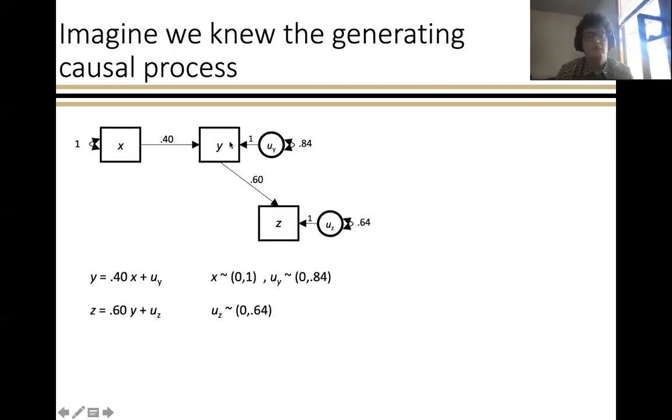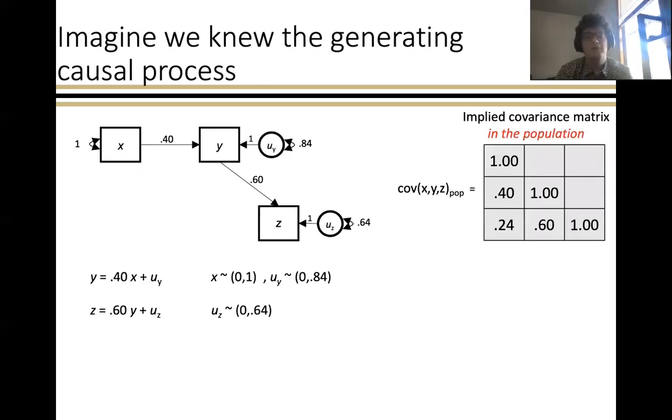If we extend that out to say that we know that y causes z at 0.6, that would add on this additional notation of z equals 0.6 times y plus u. And so this would imply a particular covariance matrix in the population, this set of relationships, where this is in a standardized space. On the diagonal, we have the variances of the variables, which are one. And then on the off diagonals, we have the relationship between x and y at 0.4, between y and z at 0.6, and the relationship between x and z in a structural equation model, in this case, would be 0.4 times 0.6 or 0.24.